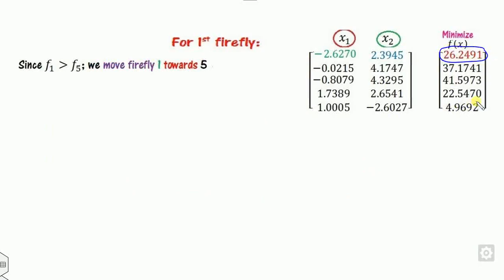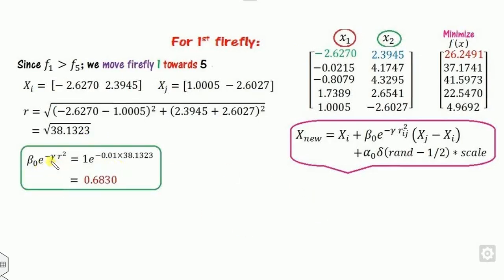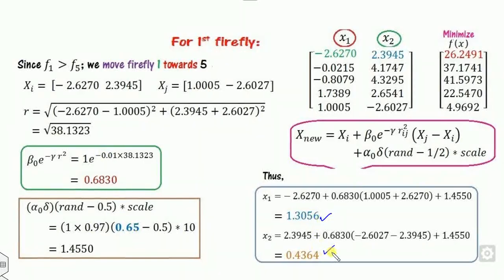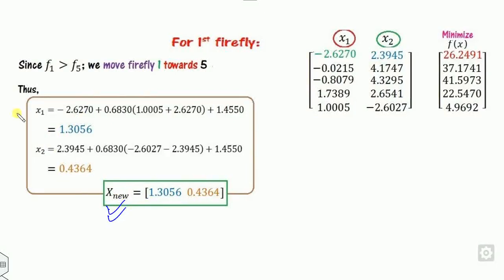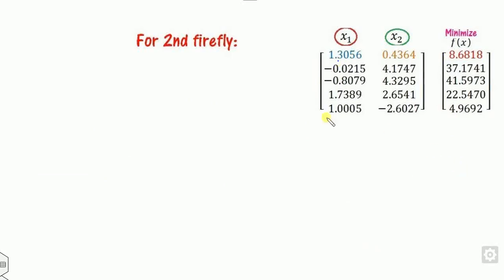Compare f1 with f5: since f1 > f5, move firefly 1 toward firefly 5. Set x_i = firefly 1, x_j = firefly 5. Calculate r, the beta term, and use RND = 0.65. After computing new x1 and x2 — both within [−5, +5] — perform greedy selection. The new function value is better than the previous f1, so update firefly 1's position by replacing the old row with the new values. Since there are no more fireflies to compare, proceed to firefly 2.